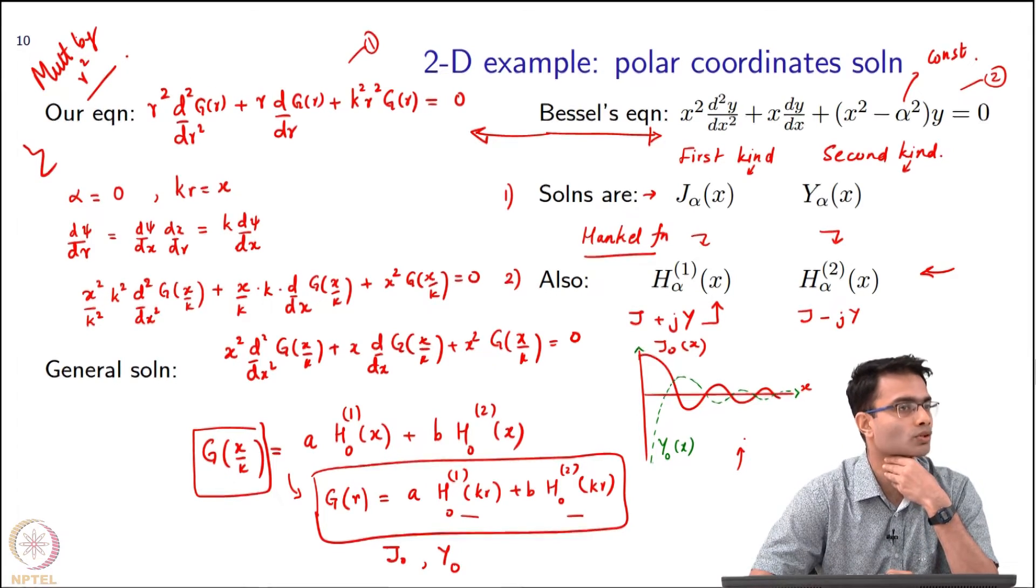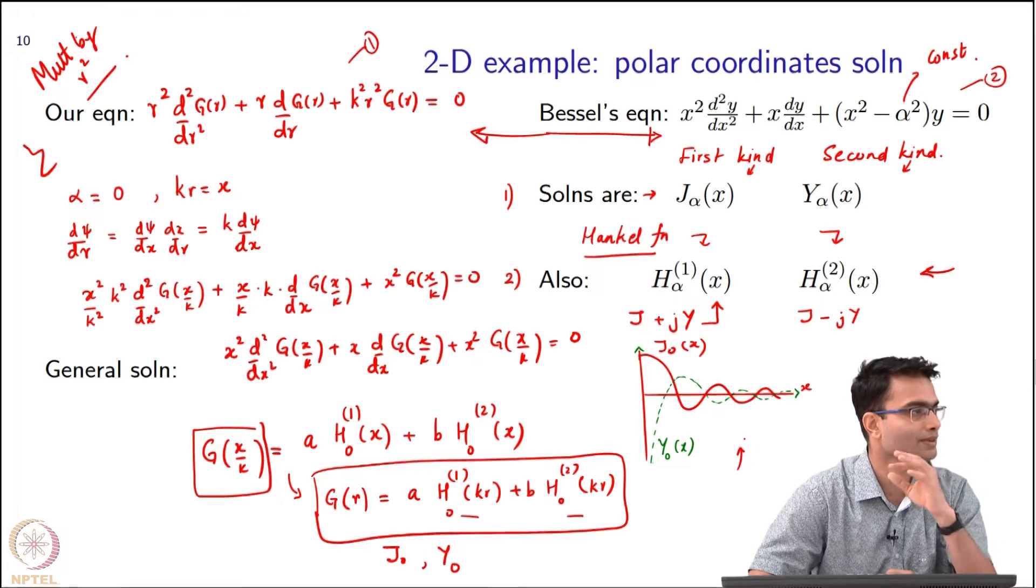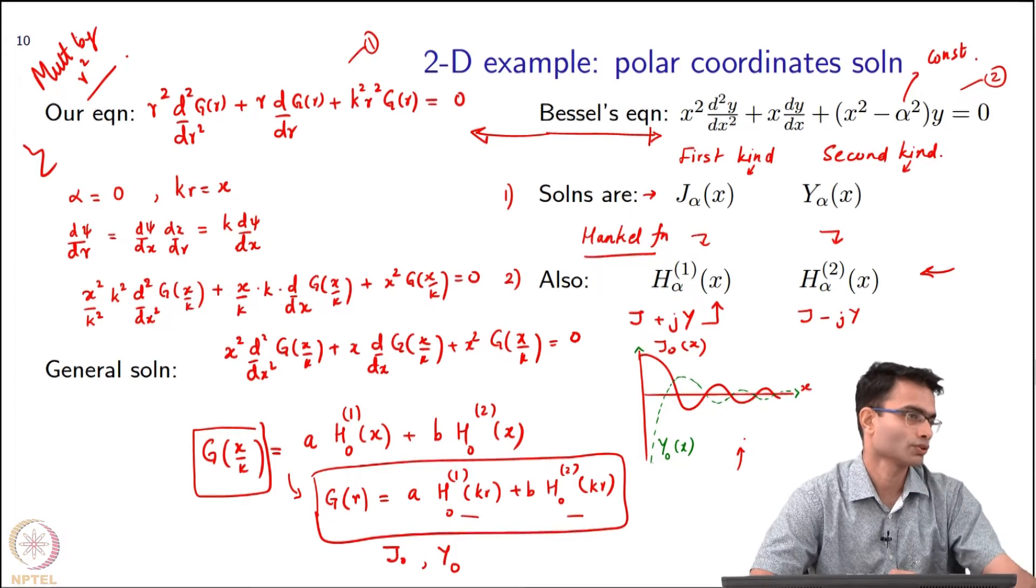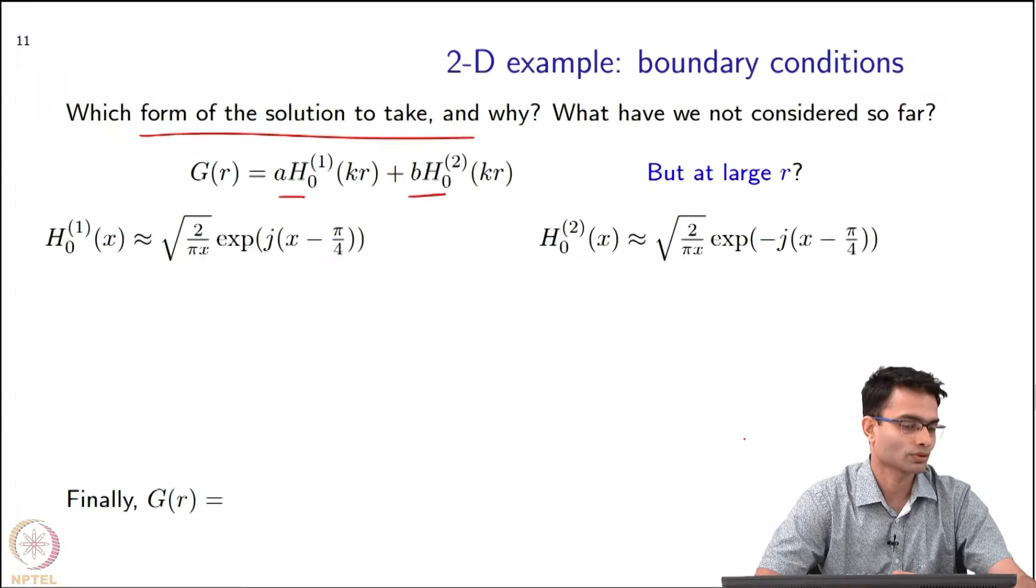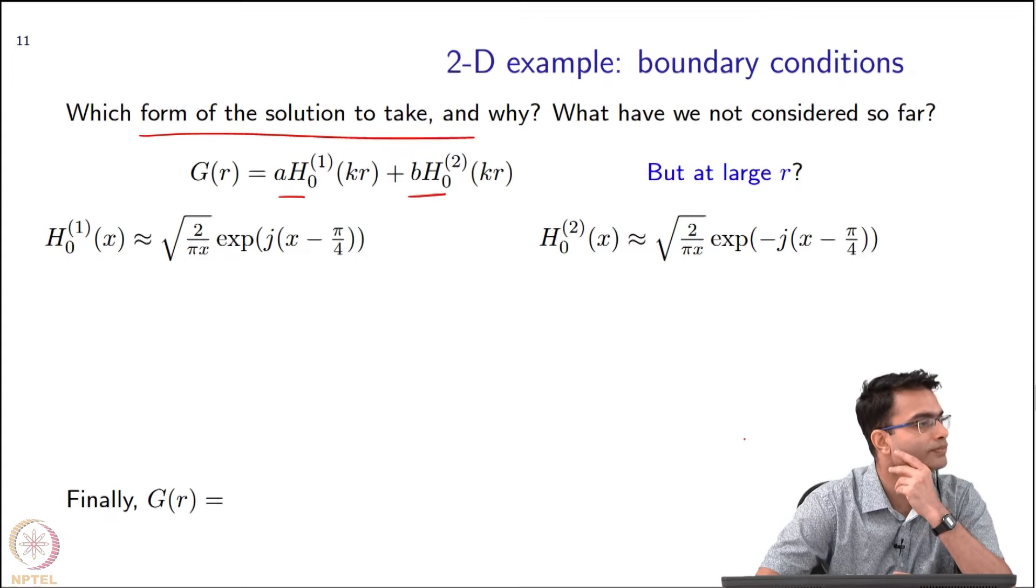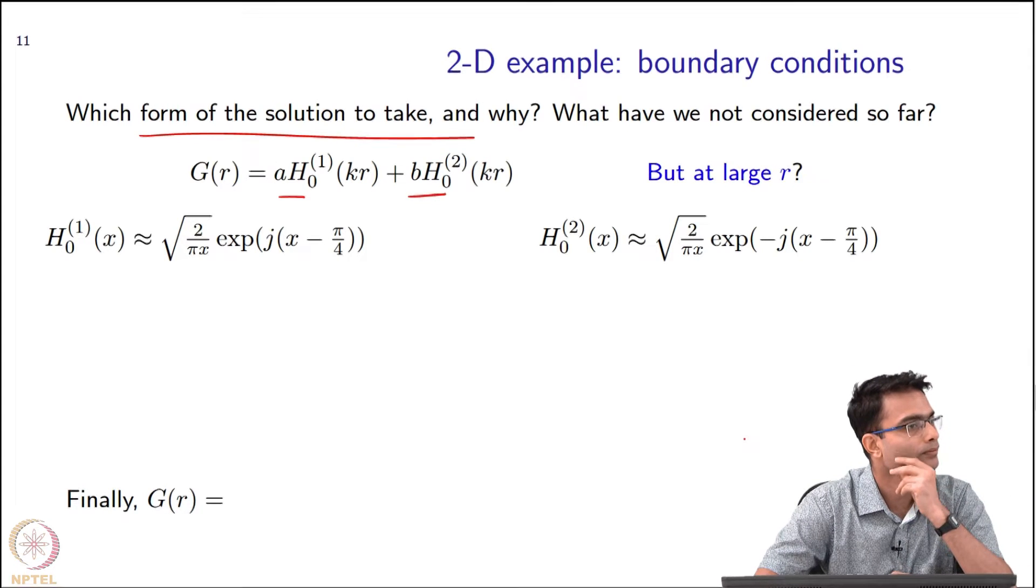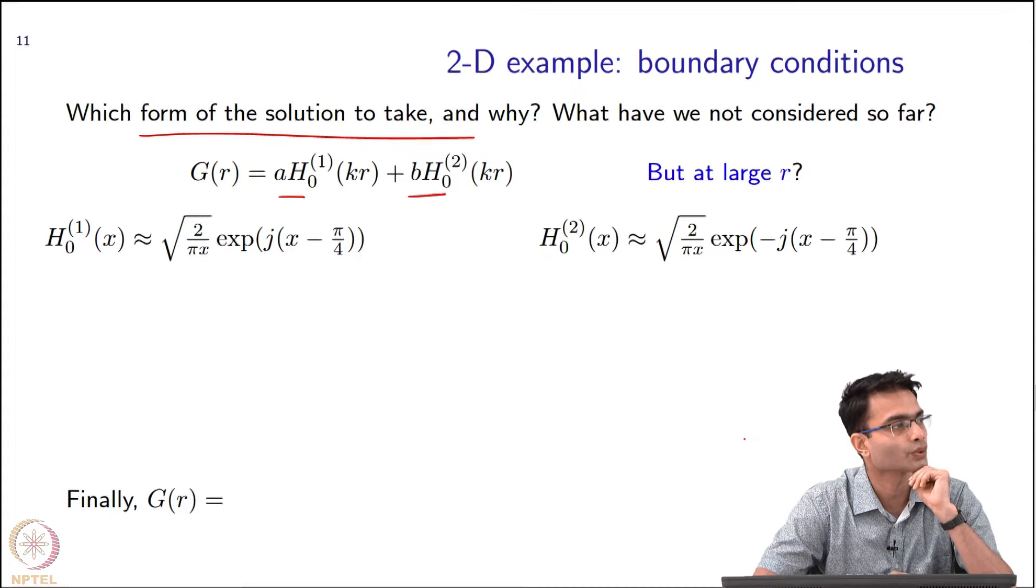Both h₀⁽¹⁾ and h₀⁽²⁾ seem to satisfy at least the asymptotic limit. So that is not sufficient. Is there any other information that I can use? Physically, this will come from physics, not math.